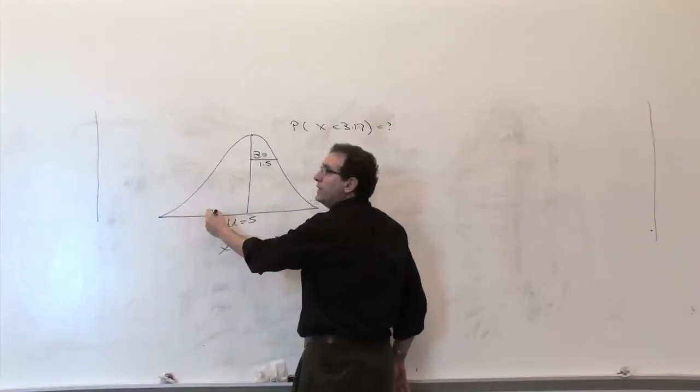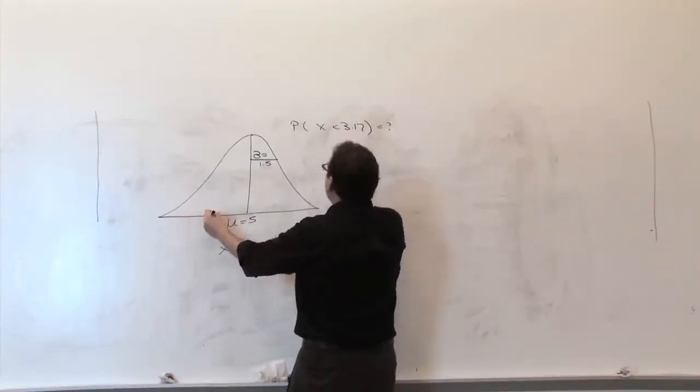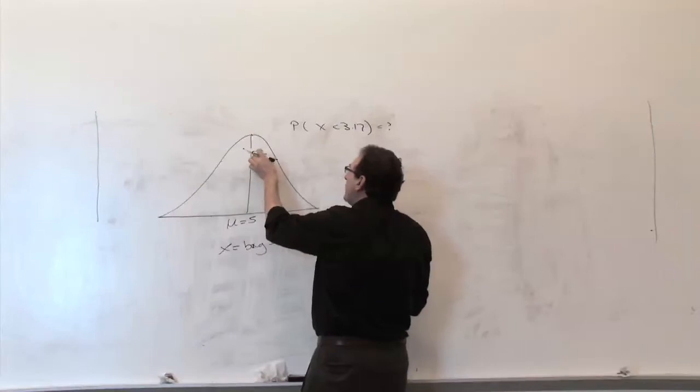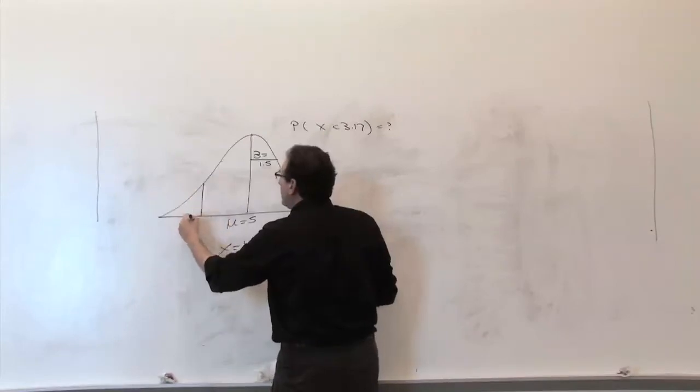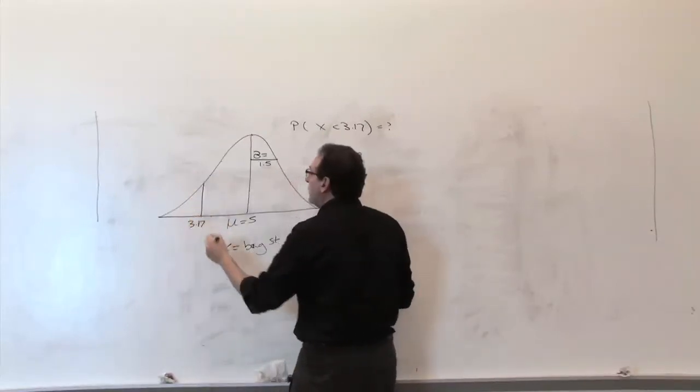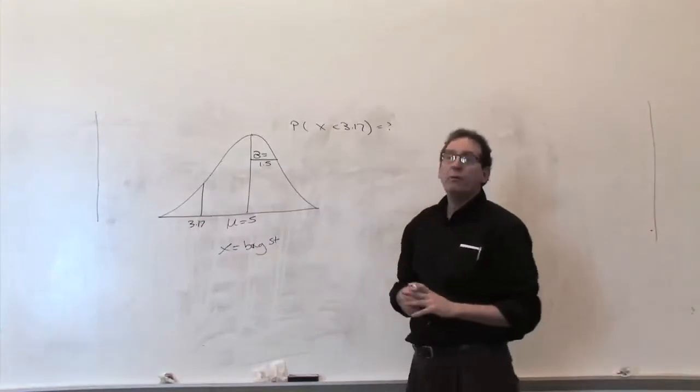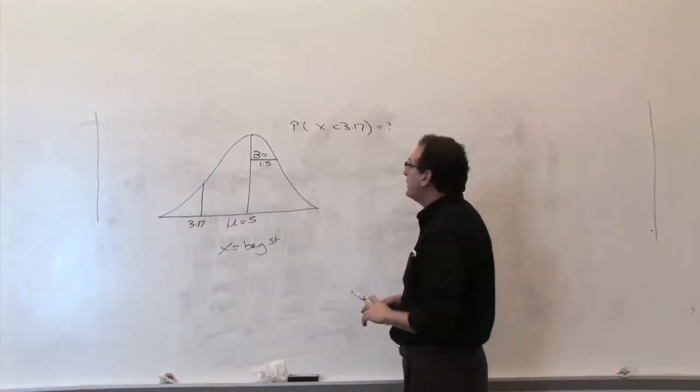So 3.5 is roughly around here. So where's 3.17? Another 0.2 or 3 away. 0.3, 0.3, 0.5. So roughly it's around here. You don't need to be that exact about it, but I would say it's roughly around here. So 3.17, especially if you round this to 3.2, is a little bit to the left of 3.5, which is roughly one standard deviation. So 3.17 is here.